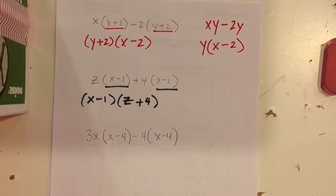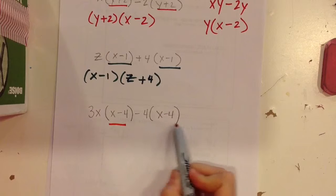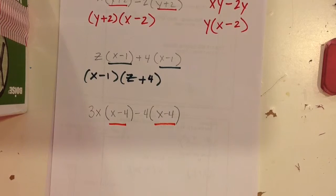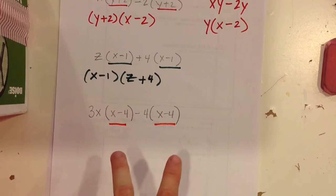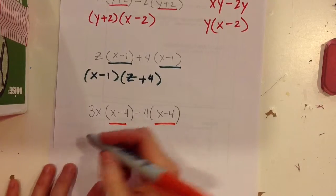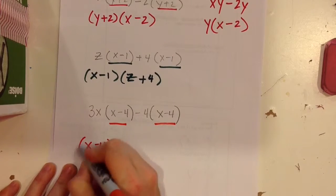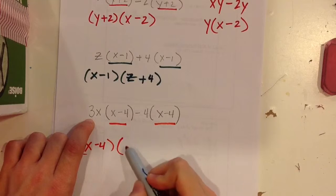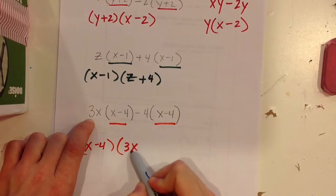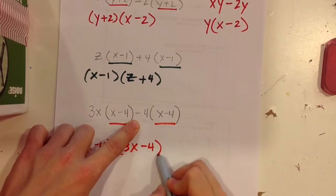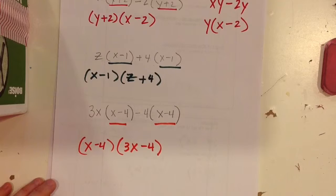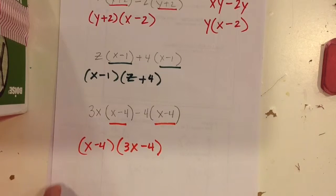In the last example, we have (x − 4) that's common to both groups. If I factor out (x − 4), I'm going to be left with 3x in front and minus 4 in between. This is our last step in factor by grouping — it's GCF, but it's also our last step in factor by grouping.